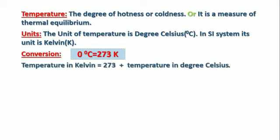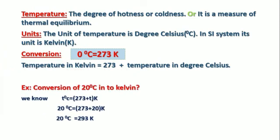Using this formula, if they ask to convert degrees to Kelvin or Kelvin to degrees, let's see one example. Convert 20°C into Kelvin. We know T(K) = (273+T)K, so 20°C = (273+20)K = 293 K.